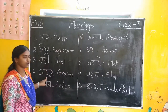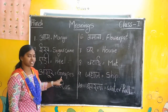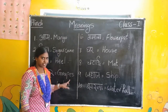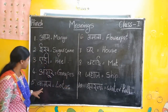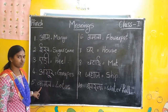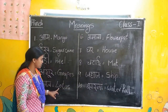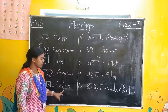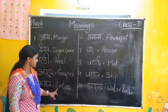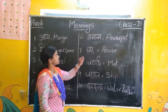Angoor — Angoor means grapes. G-R-A-P-E-S, grapes. G-A-M-A-N — G-A-M-A-N means what? Lotus. Yes, good. L-O-T-U-S, lotus.